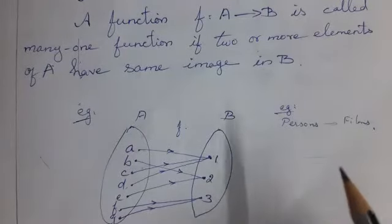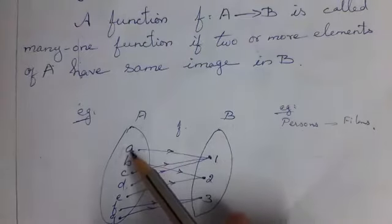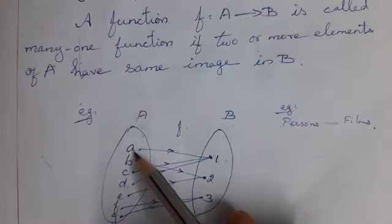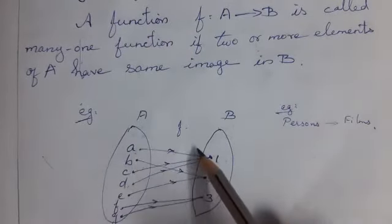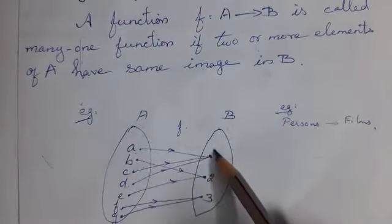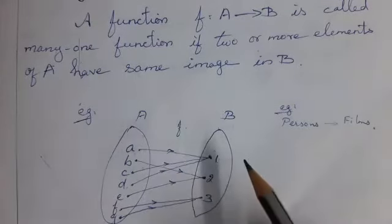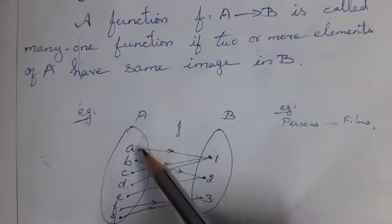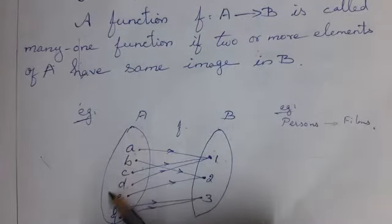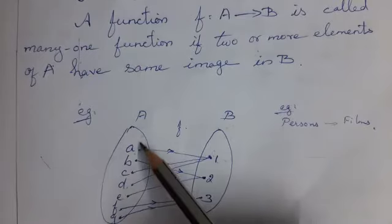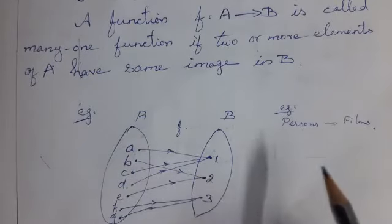Once again: one-one means for one element in A, you have a distinct element in B. Many-one function means two or more elements of A have the same image in B.